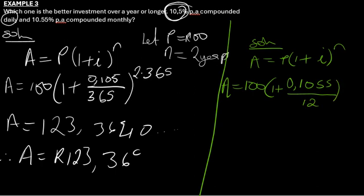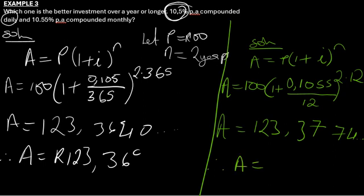Then after 2 years this money will be 100 times (1 plus 0.1055 divided by 12) all raised to the power of 24, so it is 123.3777. Therefore it will be R123.37 cents. So which one is better, is the better investment over a year or longer?